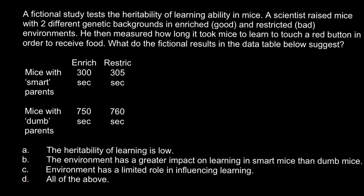Here are the four answers to choose from. Answer A: heritability of learning is low. Answer B: the environment has a greater impact on learning in smart mice than in DAP mice. Answer C: environment has a limited role in influencing learning. And answer D: all of the above.